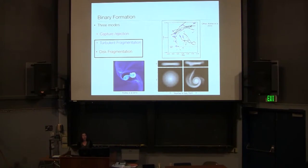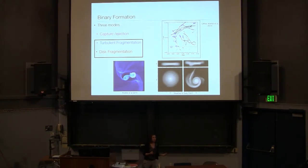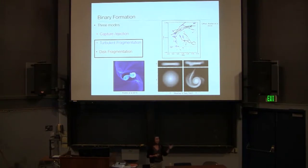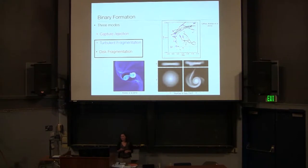There are three modes of binary formation that we think operate in different regimes of parameter space. The simplest to understand is the idea of capture or ejection — you either start with two unaffiliated stars, they have a close encounter that is somewhat dissipative, and you end up taking an unbound system and making it bound. One of the better ways to capture a system is if you have an interaction between a protostellar disk around one star and another star, although even this process is not effective in most regimes of parameter space — you need very high stellar densities. It can certainly happen, it's just probably not the dominant mechanism.